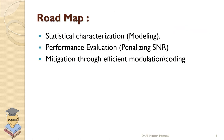Our roadmap: why are we doing this modeling? First, we need to understand how things work, so we'll do statistical modeling. Then we'll use this model for performance evaluation — to see how much penalty in signal-to-noise ratio results from multipath. Once we know how much we've lost, we can find mitigation techniques through efficient modulation, coding, and other possible mitigation techniques. So: we need to know, we need to evaluate, and then we need to come up with solutions.